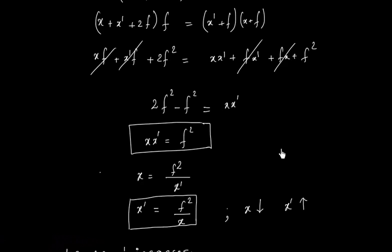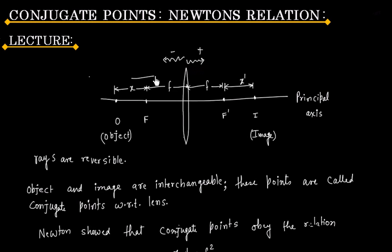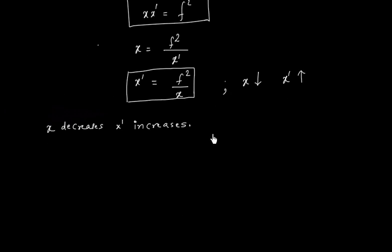The physical meaning is: X decreases means object is coming towards the lens. X dash increases means image is going away from the lens. So this has a physical meaning that if object comes towards the lens, image goes away from the lens.